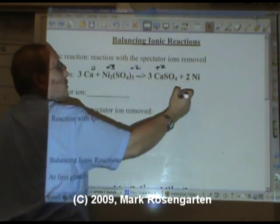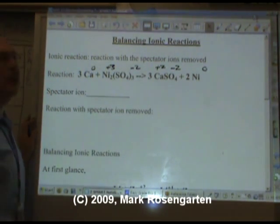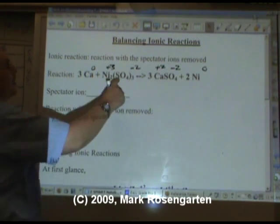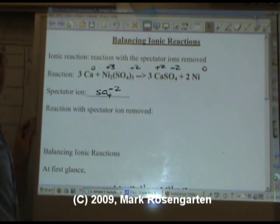Calcium is plus two, sulfate is minus two, nickel is zero. You can confirm this on the periodic table if you like. Since the sulfate charge doesn't change, it's the spectator ion.